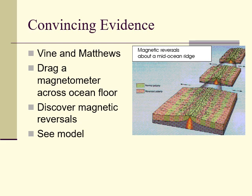So what does that mean? The green sections on the model are normal polarity — the North Pole is where it is today, the South Pole is where it is today. But during parts of the formation of the ocean floor, there are also sections shown in a pinkish color that have reverse polarity. That means the North Pole was at the South Pole and the South Pole was at the North Pole. Does that mean the world flipped upside down? Absolutely not. It simply means that the magnetism of the poles was reversed.